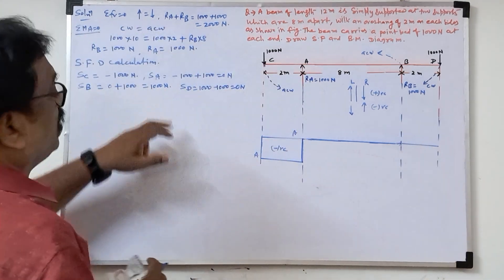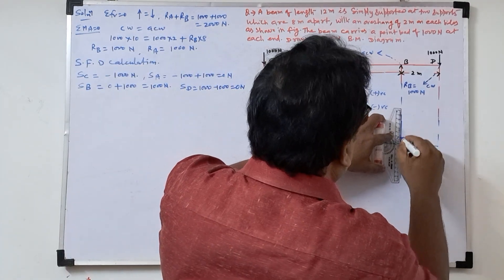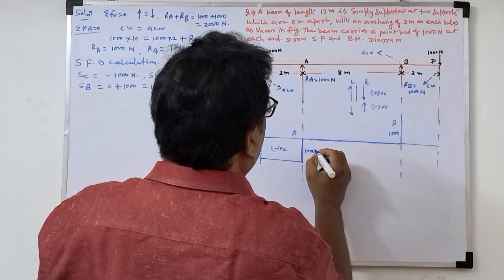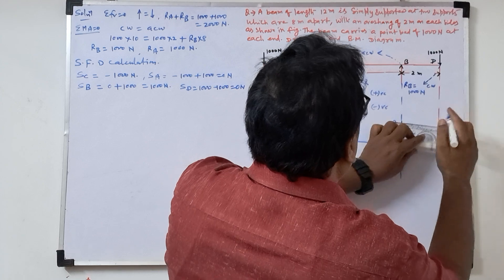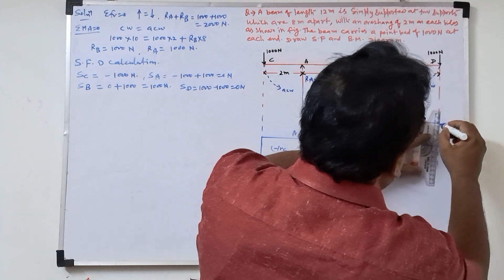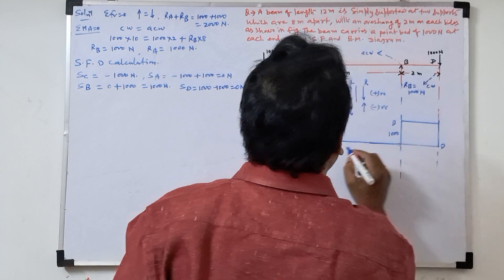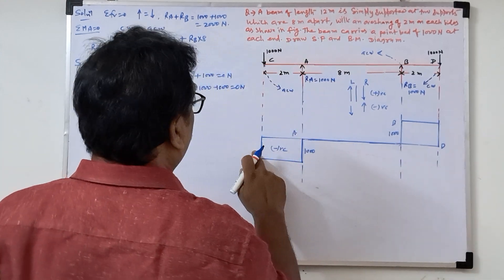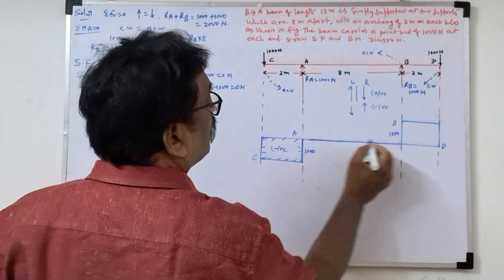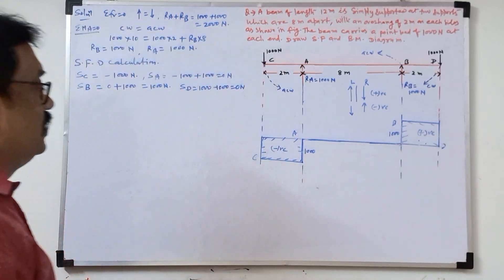Shear force at B is thousand, so it will go up to thousand at B point. In between B and D there is no load, so a horizontal line. At point D, shear force will be zero. So this is the complete shear force diagram — at D, B, A, and C point. This is negative here, and this is positive. So this way the shear force diagram is completed.